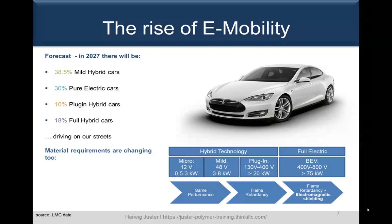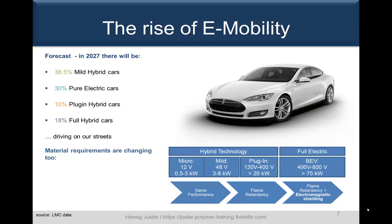For the hybrid technology — micro, mild, and plug-in — at 12V and 48V, plastic compounds need to fulfill the same performance already known in internal combustion engines, so only a few modifications are needed. As voltage increases towards 400V and plug-in hybrid, flame retardancy becomes a new important requirement for components, and first modifications to plastic parts are already needed.